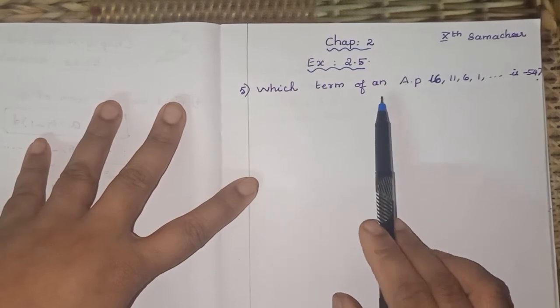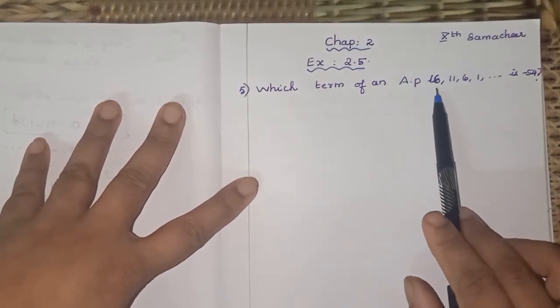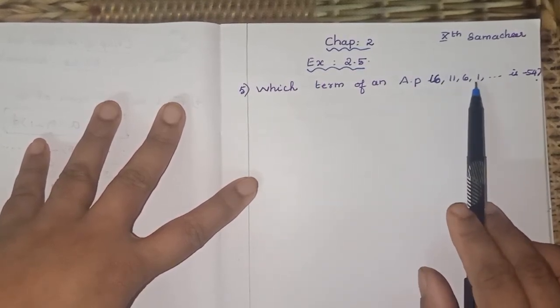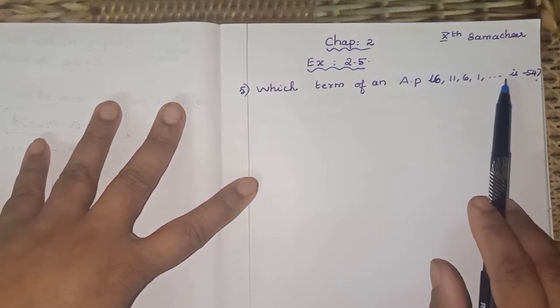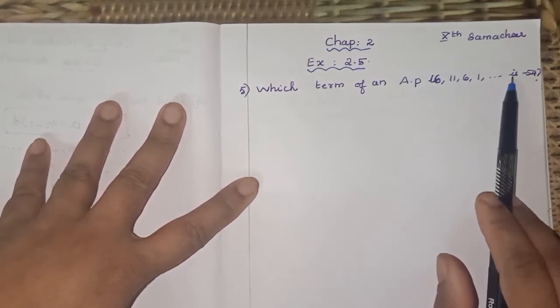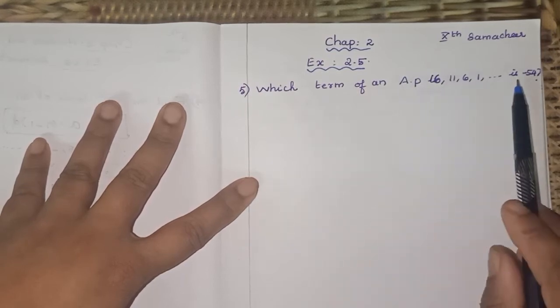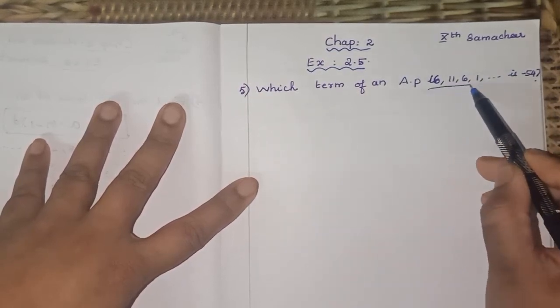Which term of an AP? The AP is given: 16, 11, 6, 1, and it goes on. We don't know the last term. This is the AP.